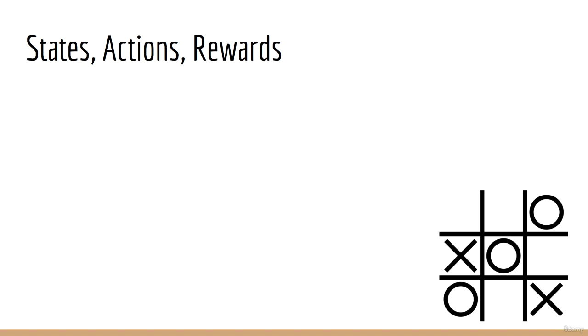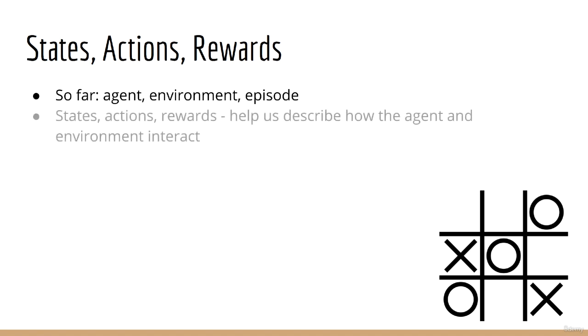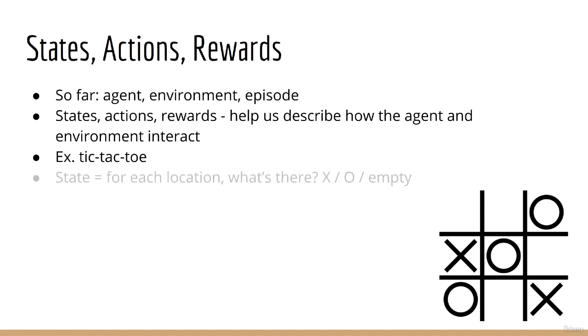Alright, so to recap the terms we've discussed so far, now we have agent, environment, and episode. The next few terms I would like to think about are the state, action, and reward. These items help us describe what goes on when the agent and environment interact. Let's again use our tic-tac-toe example. In this scenario, the state would be the configuration of the board. So for each position on the board, I want to know, is there an x there, is there an o there, or is it empty? This information is all that I need in order for my agent to make an intelligent decision about what move to play next. Speaking of which, the moves that the agent makes are what we refer to as the action. So in tic-tac-toe, to take an action would mean placing a new x or an o somewhere on the board.